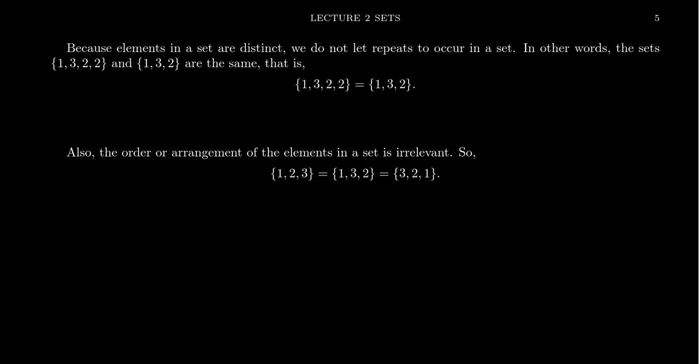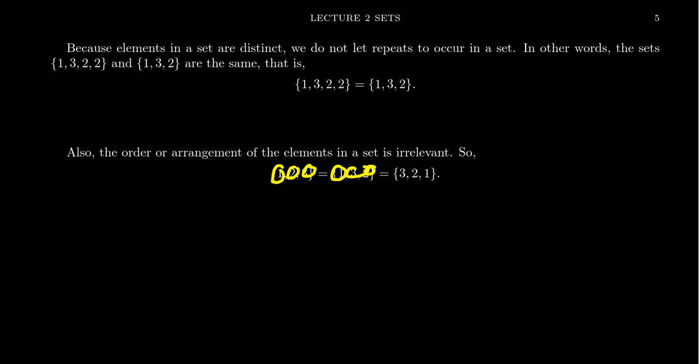Another important thing about sets is that the order in which the elements occur does not matter. The arrangement of the elements is irrelevant. The set containing 1, 2, 3 and the set containing 1, 3, 2 are considered the same set. Likewise, the set containing 3, 2, 1 equals the previous two sets. These are all the same thing. All that matters when it comes to a set is the membership — who belongs to the set. All three sets contain the numbers 1, 2, and 3. Order doesn't matter; repetition doesn't matter. Only membership matters.